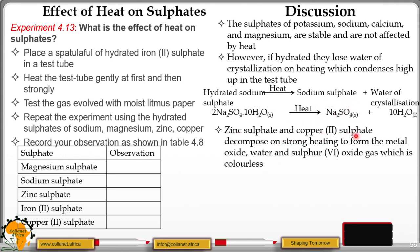Zinc sulfate and copper(II) sulfate decompose on strong heating to form the metal oxide, water and sulfur(IV) oxide gas, which is colorless. The gas turns moist blue litmus paper red because sulfur(IV) oxide gas is an acidic gas.